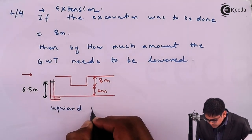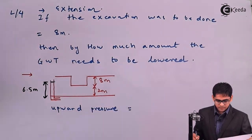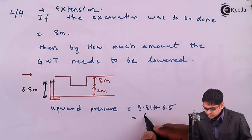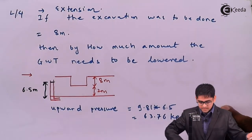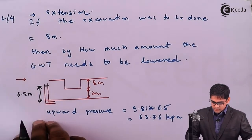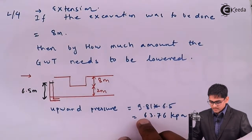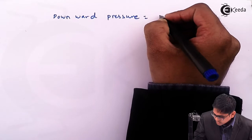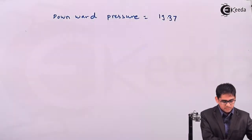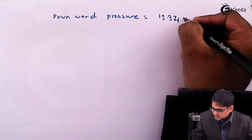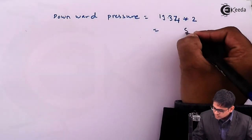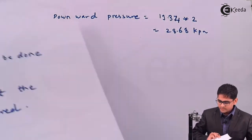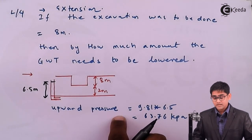The upward pressure remains 9.81 × 6.5 = 63.76 kPa, the same as before. However, the downward pressure — the self-weight of remaining clay — changes. Downward pressure = γ_sat × 2 m = 19.34 × 2 = 38.68 kPa. Comparing upward (63.76 kPa) with downward (38.68 kPa), the upward pressure exceeds downward pressure, so the bottom is not stable.